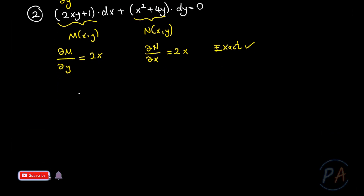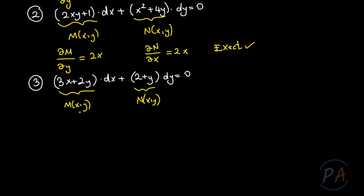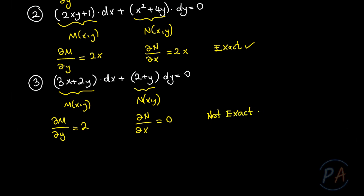One more example — probably the last one: (3x + 2y) dx + (2 + y) dy = 0. We name the coefficient of dx as M(x, y) and the other as N(x, y). The partial derivative of M with respect to y equals 2, but the partial derivative of N with respect to x is 0. So this differential equation is not exact.